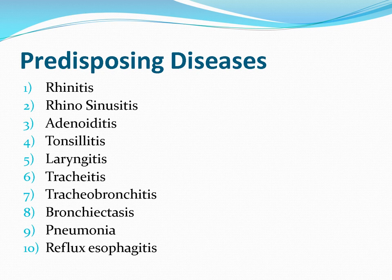Loco-regional diseases causing acute suppurative otitis media include rhinosinusitis, adenoiditis, tonsillitis, pharyngitis, laryngitis, laryngotracheobronchitis, and pneumonia. Recent research has also proven that reflux esophagitis (GERD) can be a cause. In cases of recurrent acute suppurative otitis media with no obvious cause such as DNS, cleft palate, or adenoids, reflux should be ruled out.